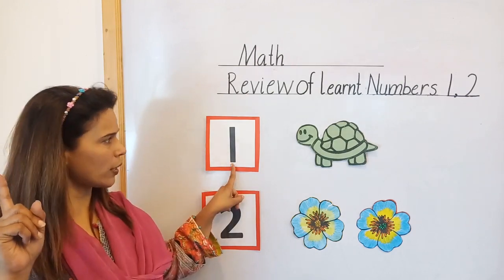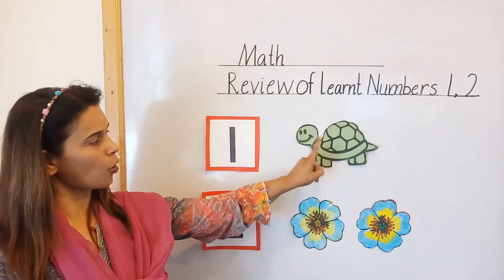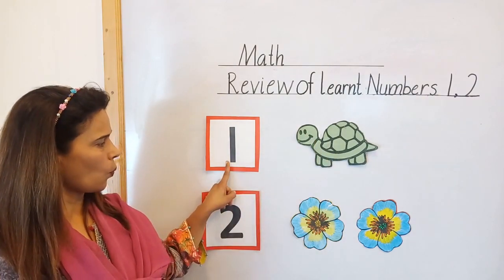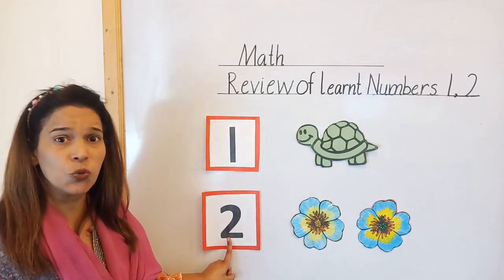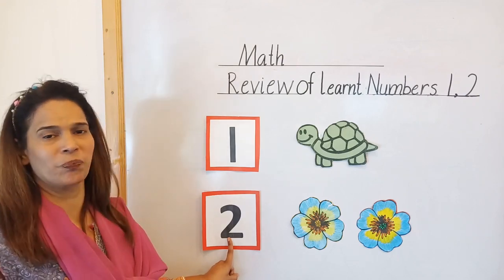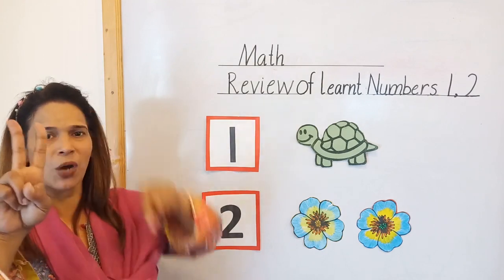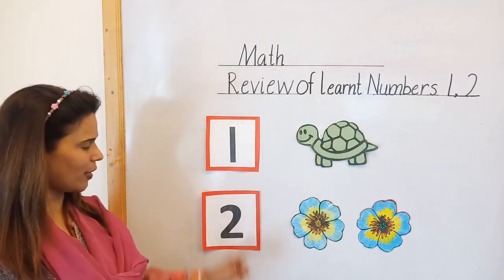Now number 1: 1 turtle. How many turtles? 1 turtle. Now which number is this? Number 2. Which number is this? Number 2. Take out your two fingers: 1, 2. How many fingers? 2 fingers. Very good! Okay, now number